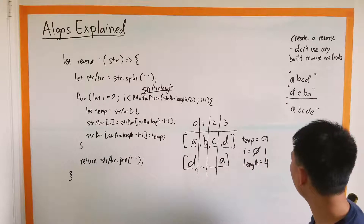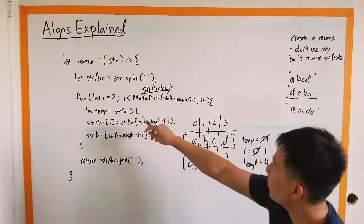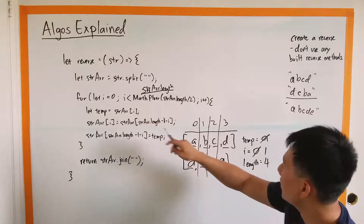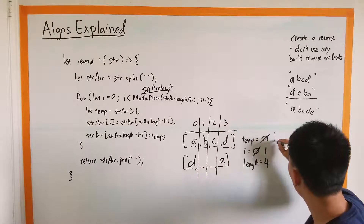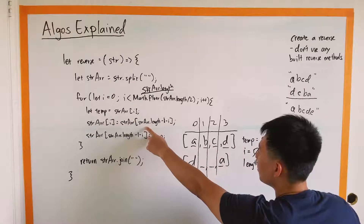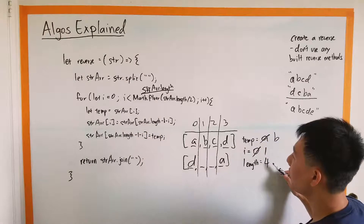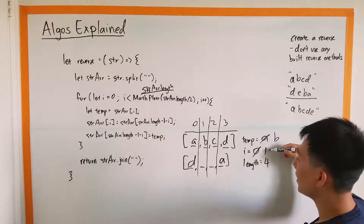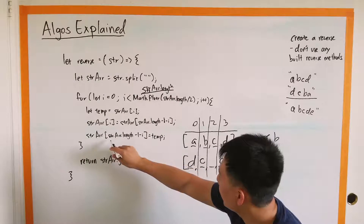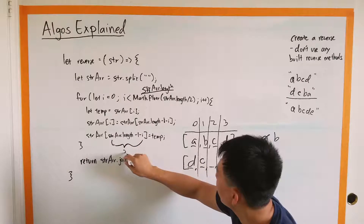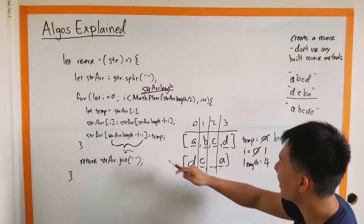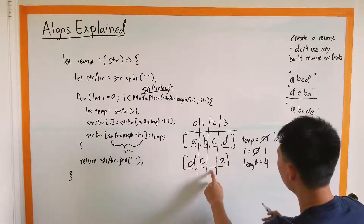Now I is incremented to one. We go through the condition — I is less than string dot length, which is true. Temp is string array of i which is one — that's B. So temp is B. Now string array of i gets replaced with whatever is at index string array dot length minus one minus i: four minus one is three, minus one is two. So whatever is at index two — that's C — we put it into index one. Then string array at index two gets set to temp, which was B.